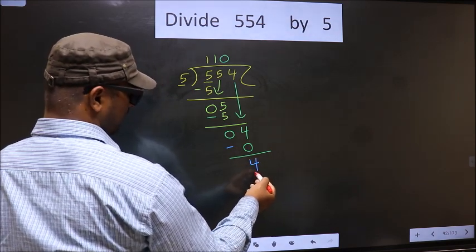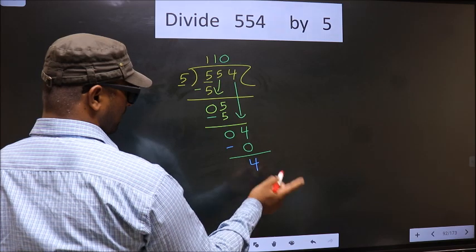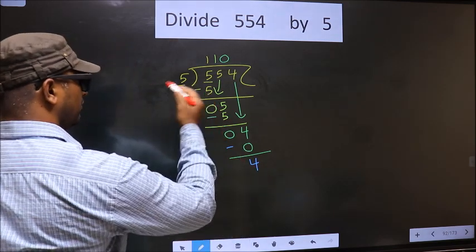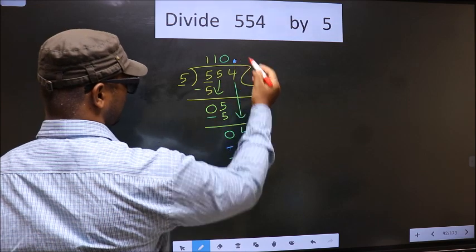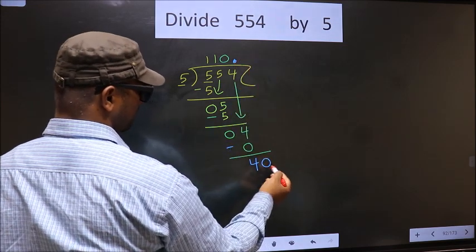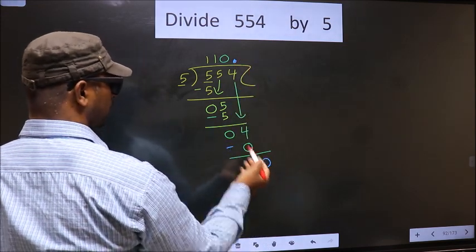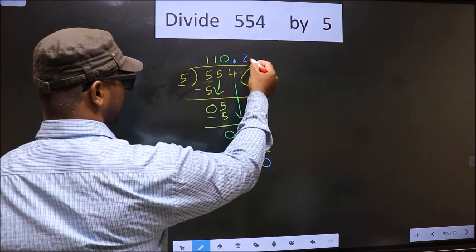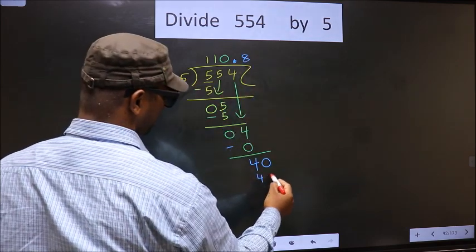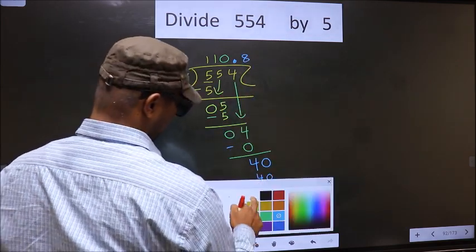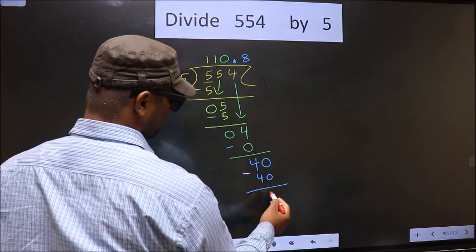Now here we did not bring any number down, and 4 is smaller than 5. So now you can put a decimal point and take 0 here, making 40. When do we get 40 in the 5 times table? 5 eights is 40. Now subtract: 40 minus 40 equals 0.